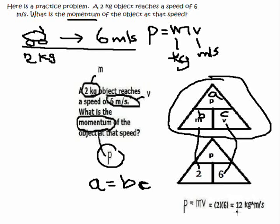So it's 2 times 6, which gives us 12 kilograms meters per second.